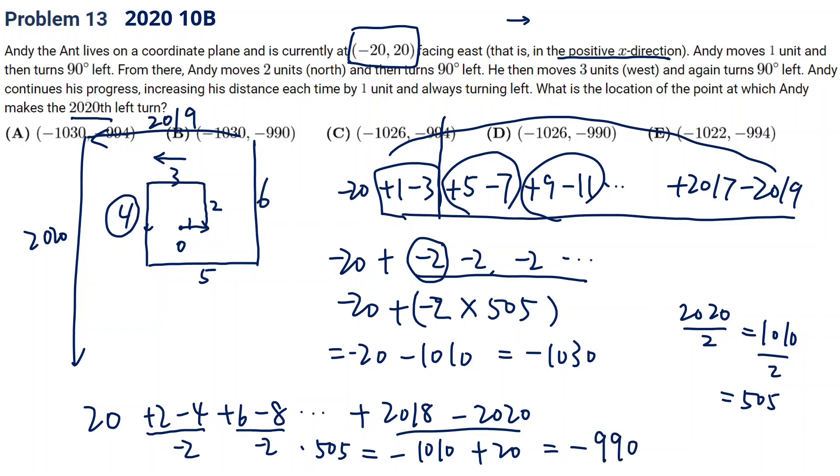So the answer for this point is horizontally negative 1,030, vertically negative 990. So the answer is B.